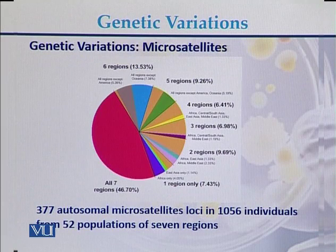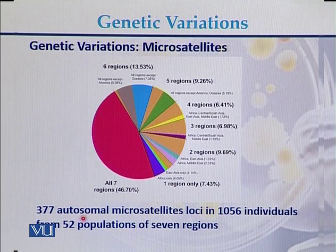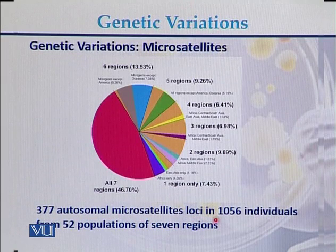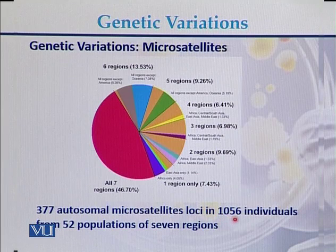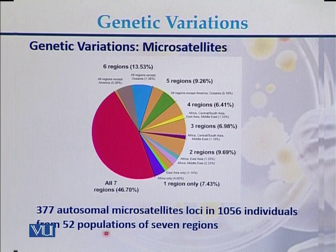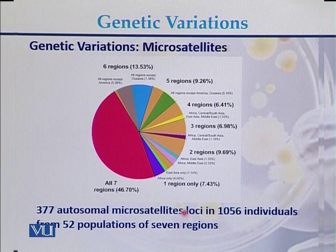Genetic variations can also be seen in the form of microsatellites. 377 autosomal microsatellite loci were genotyped in 1056 individuals from 52 populations across seven regions of the world.